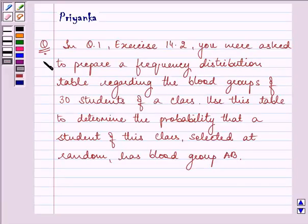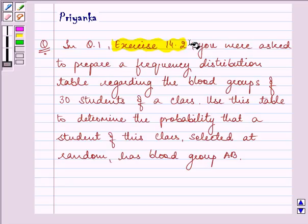Hi and how are you all today? The question says in question 1 exercise 14.2 you were asked to prepare frequency distribution table regarding the blood groups of 30 students of a class. Use this table to determine the probability that a student of this class selected